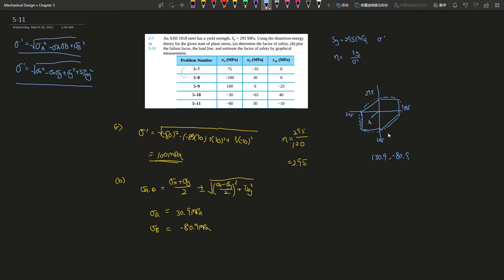In this case, A is on the positive side, so it's somewhere around here. That's point A, and then you extend it—probably somewhere around here at 30.